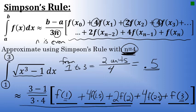So, this expression represents an approximation for the integral from 1 to 3 of the square root of x to the third minus 1 dx with Simpson's rule having n equals 4. Let's evaluate this expression to find our approximation.